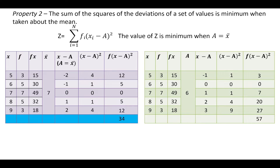So the value of z in the first case, when a is equal to the arithmetic mean, is 34, and the value of z for any value of a is 57 — we have taken the value as 6. You can take any other number and try to find out the value of z yourself. Thus, we can see that the sum of the squares of the deviation is minimum when taken about the mean, as we found in case 1 when we got z as 34.